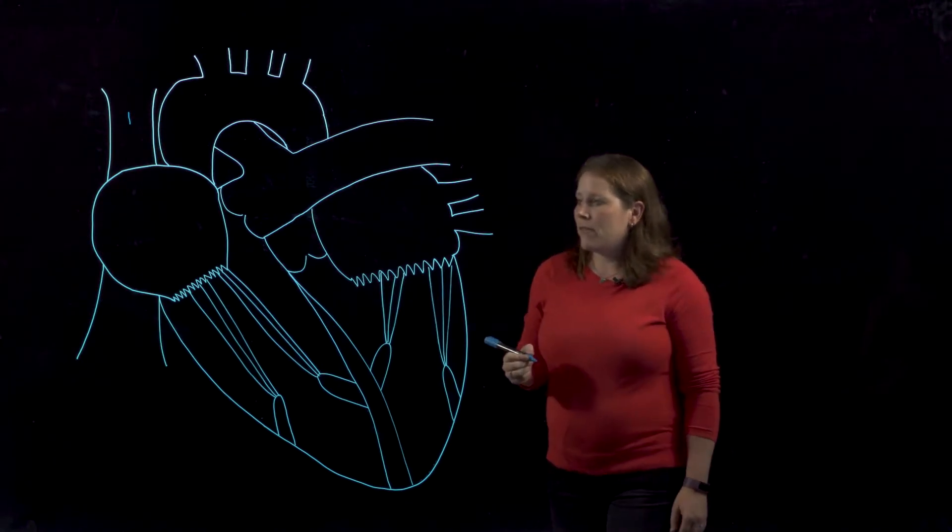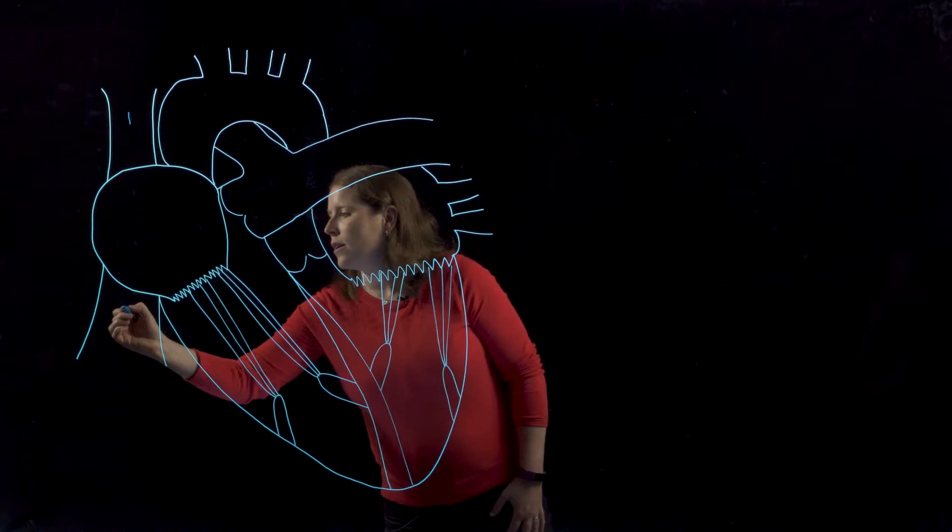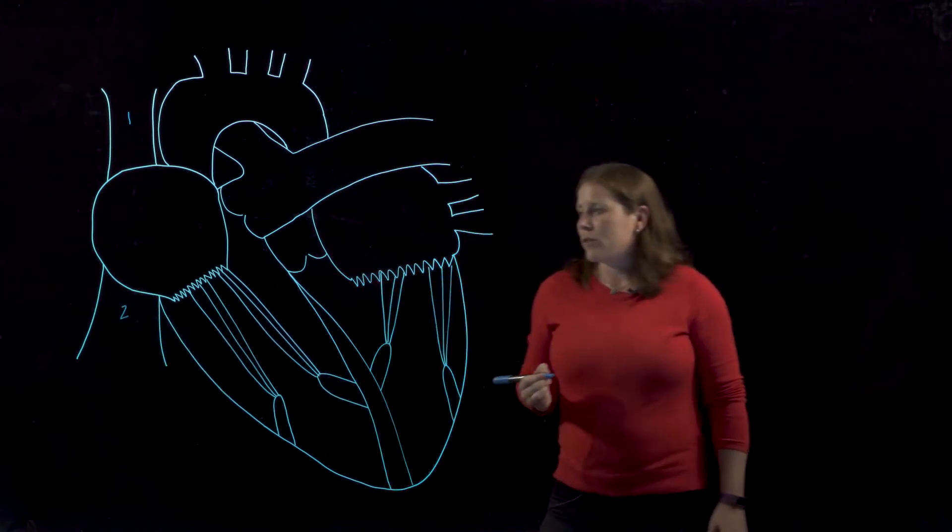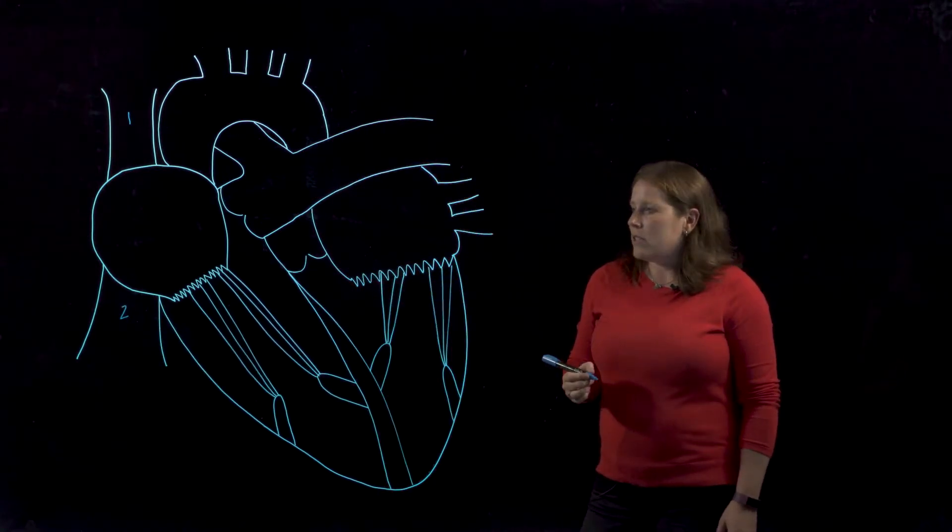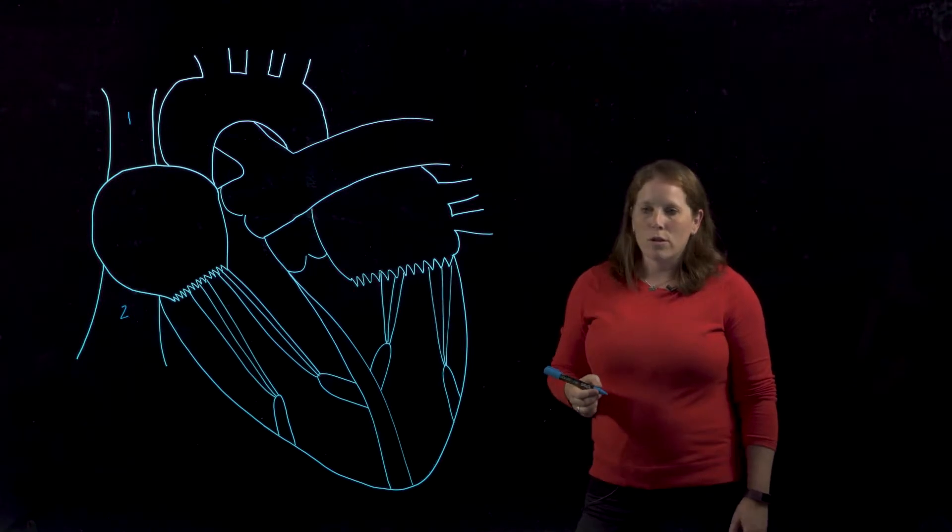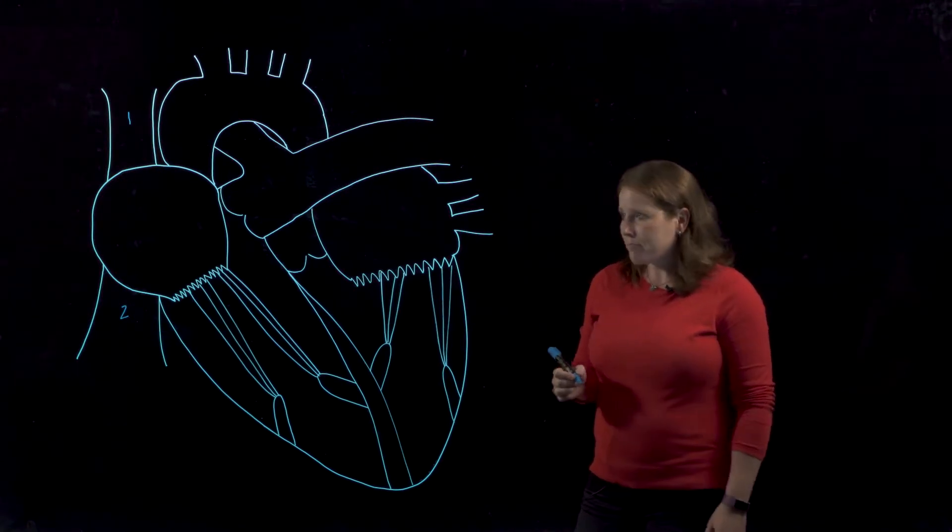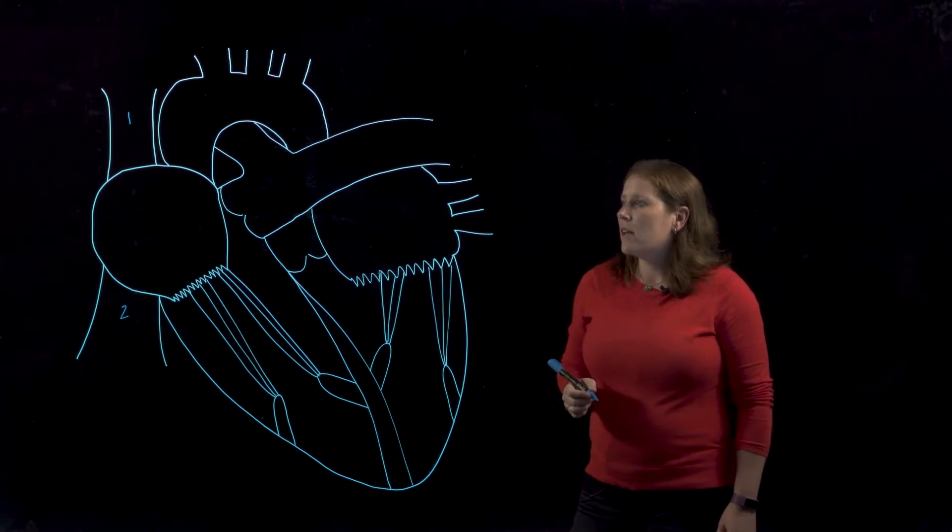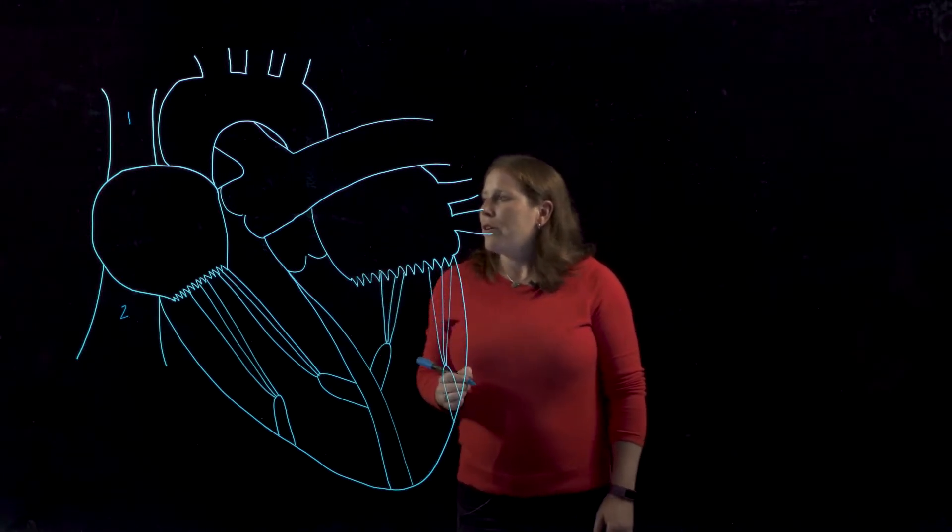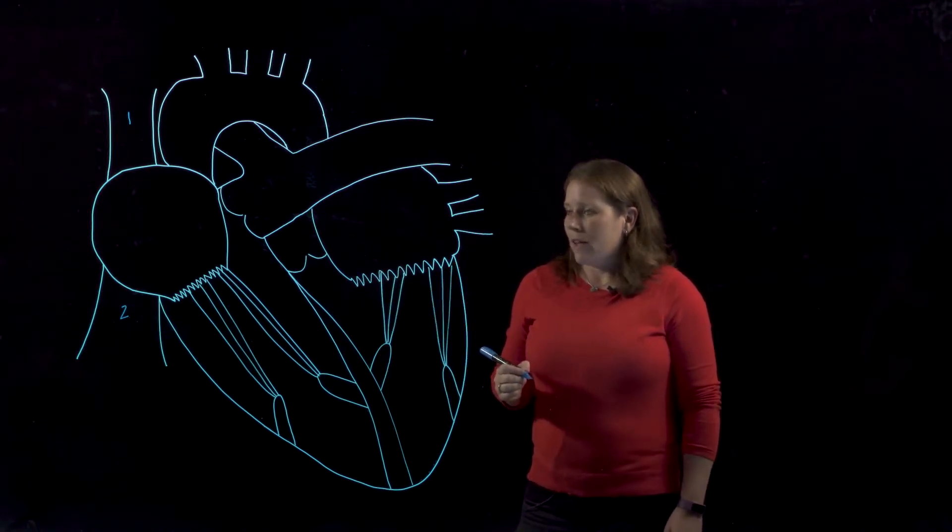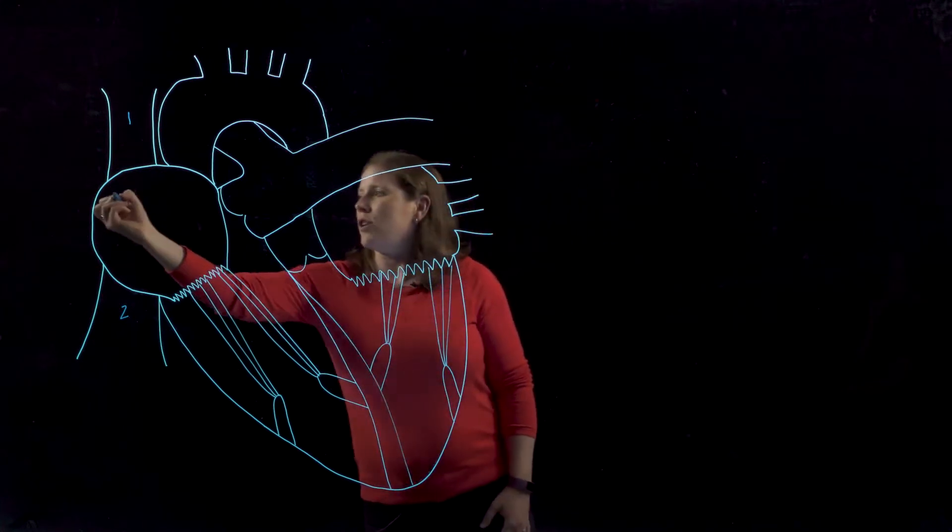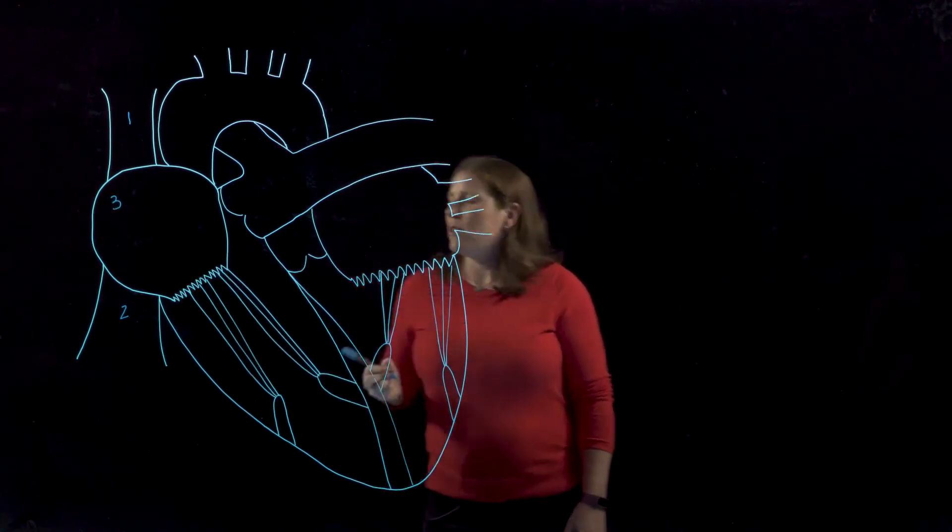We have an equivalent inferior vena cava that also drains into the right atrium and this will drain all of the deoxygenated blood from below the diaphragm. So that's abdomen, lower limbs, essentially everything else. So the superior vena cava and the inferior vena cava will both drain into this chamber which is the right atrium.